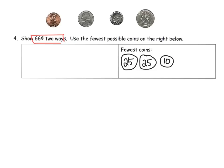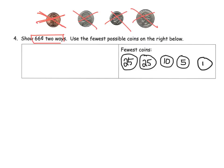We've got 60 cents. Can we add a nickel? Yes — that gives us 65 cents. Can we add another nickel? No, that would make 70 cents — too much. So we're at 65 cents. Now we finally use a penny, and we've reached 66 cents. That's our 66 cents using the fewest number of coins.